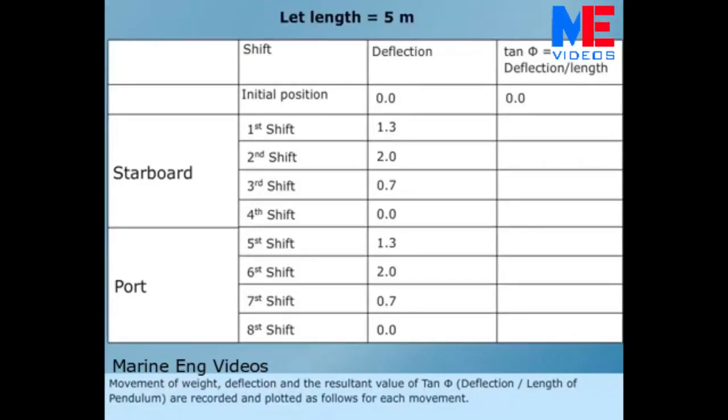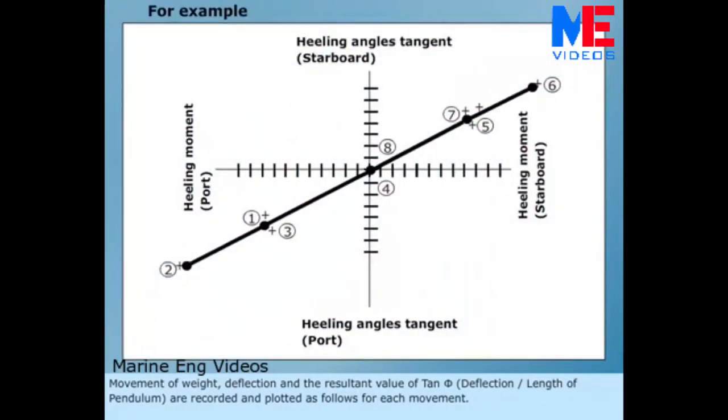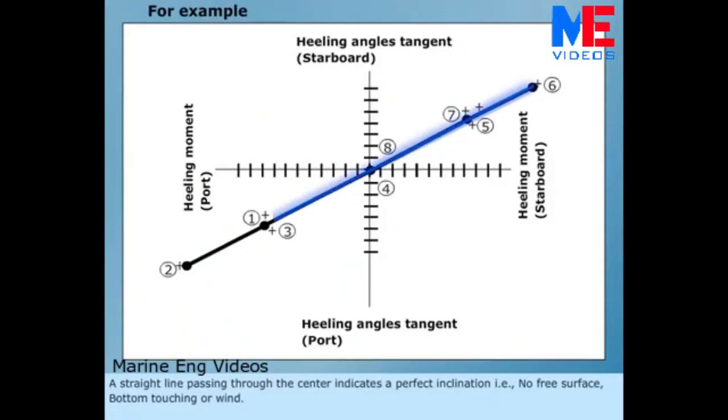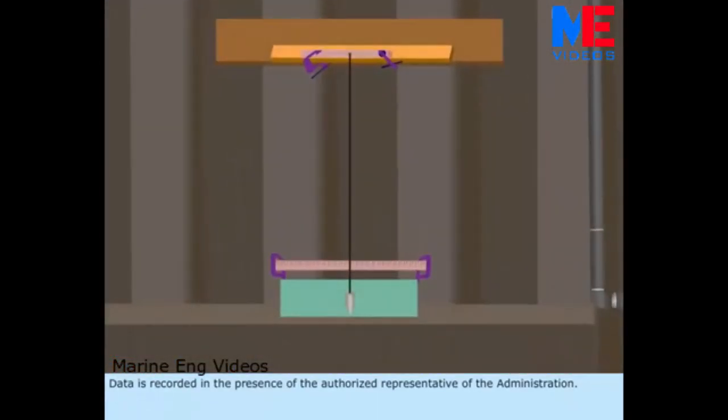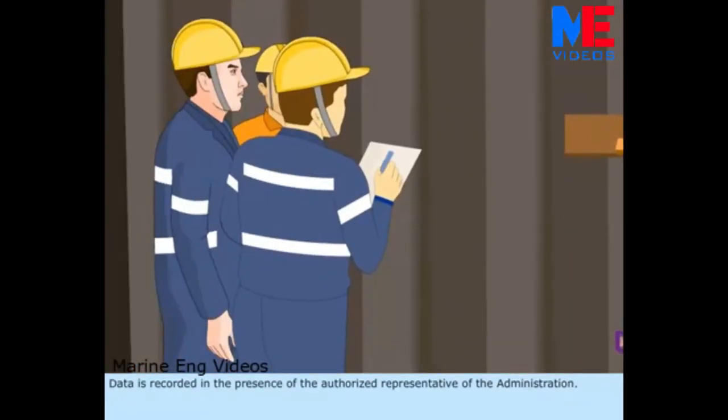Movement of weight, deflection and the resultant value of tan phi or deflection divided by length of pendulum are recorded and plotted as follows for each movement. A straight line passing through the center indicates a perfect inclination, i.e. no free surface, bottom touching or wind. Data is recorded in the presence of the authorized representative of the administration.